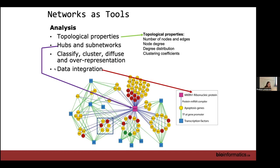Some things you can do with your network include looking at topological features. A hub is something that is more connected than other things in the network. Within a network you can also identify clusters, and you can integrate different data types — different shapes of nodes for different types of genes, different colors — so there are a lot of graphical aspects you can use to aid in visualization.